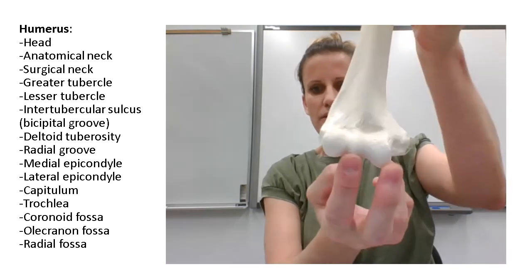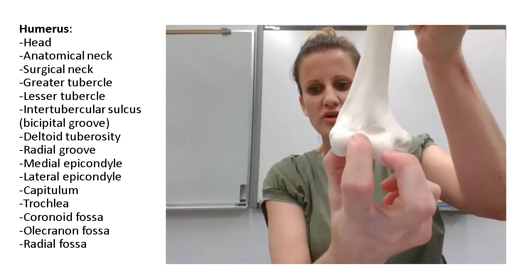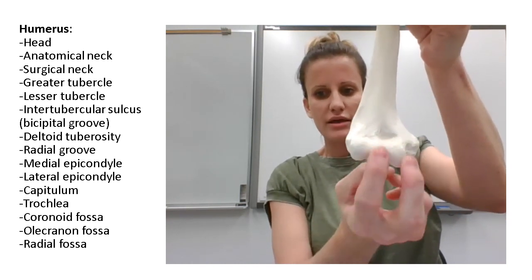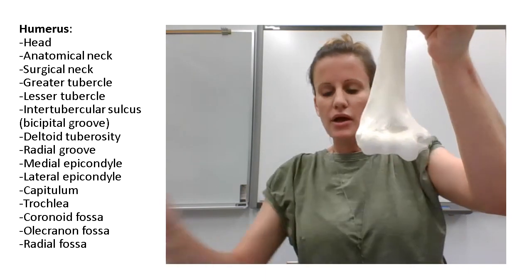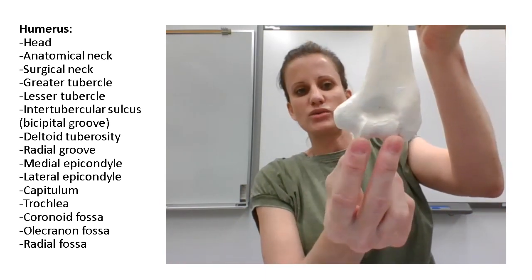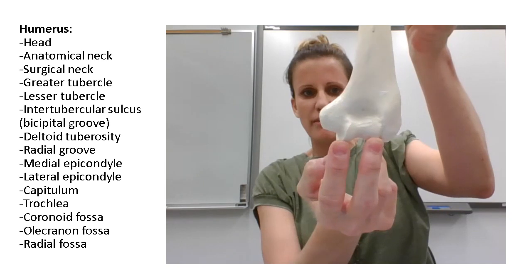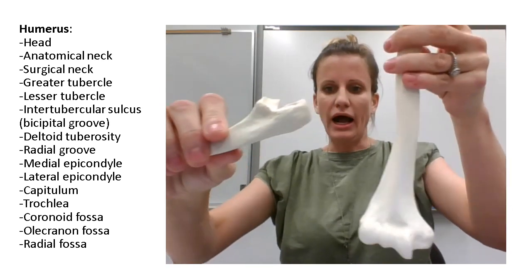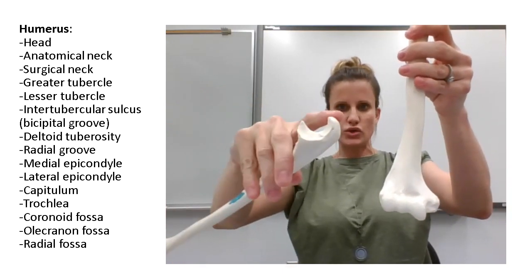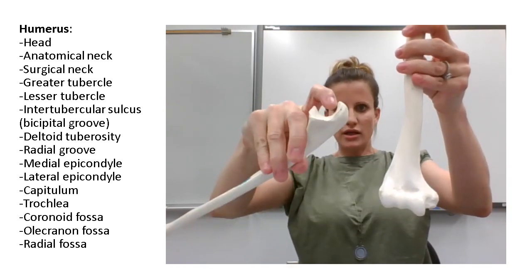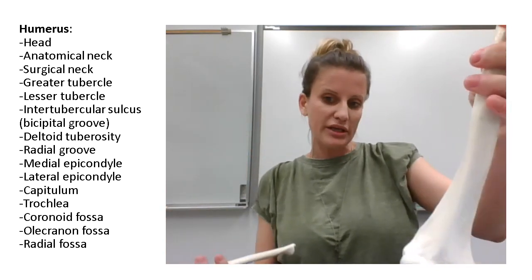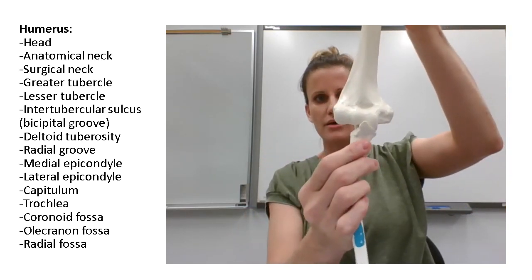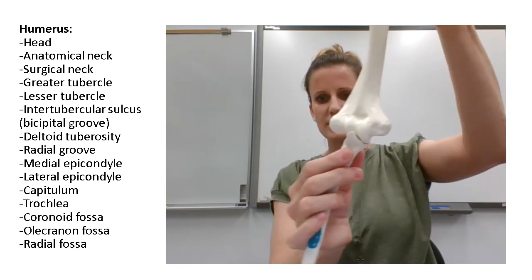The other process is the trochlea, which has two parts that stick out with a thinner groove in the middle. You can see the trochlea from the back as well, though not the capitulum. The ulna has a nice U-shape on top called the trochlear notch, and it sits perfectly on the trochlea — so the trochlea is for the ulna.